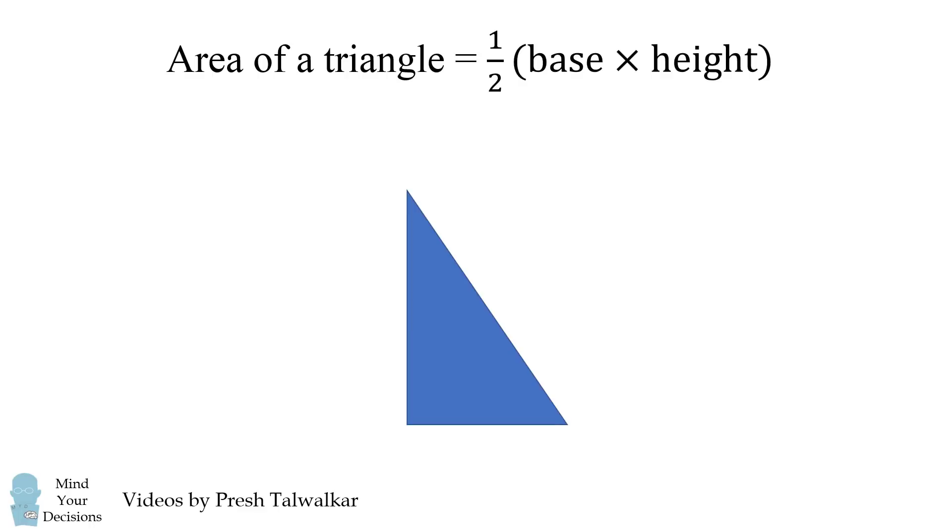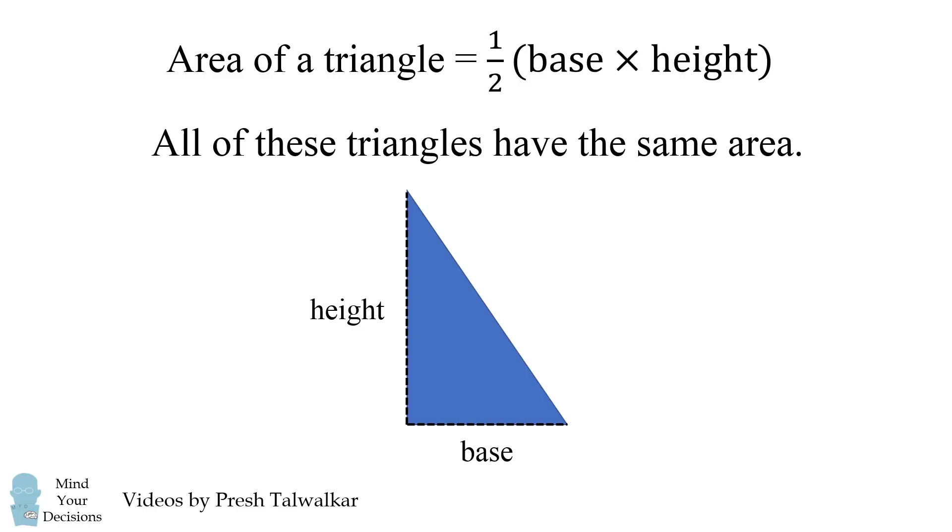So the key principle in solving this problem is to know the formula for the area of a triangle, which is one-half its base times its height. This is true even if the triangle is not a right-angle triangle. All of the following triangles have the same area. It only depends on the base and the height of the triangle.